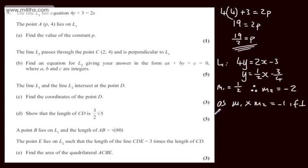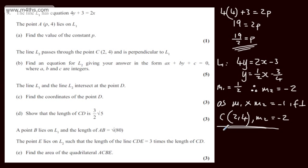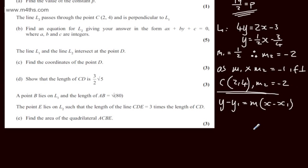I now have my point C, which is (2, 4), and my gradient M2, which is minus 2. I simply need to substitute these into the equation of a straight line. I'm going to use y minus y1 equals M multiplied by x minus x1. You can of course also use y equals Mx plus C at this stage. We'll have y minus 4 equals minus 2 times x minus 2.